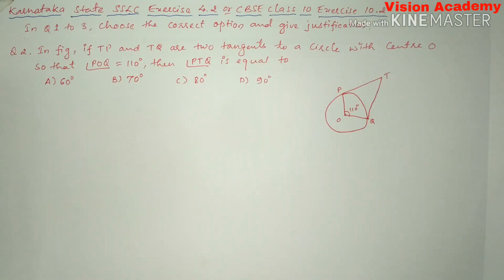In question 1, 2, 3, choose the correct option and give justification. Question number 2. In the figure, if TP and TQ are two tangents to a circle with center O,